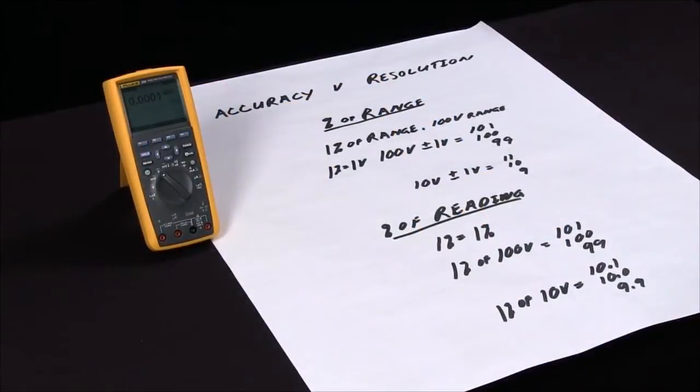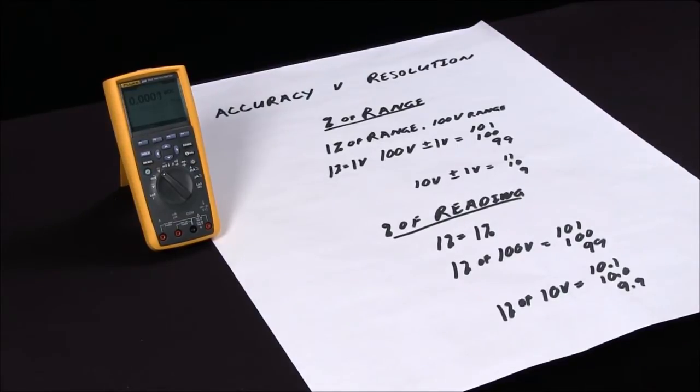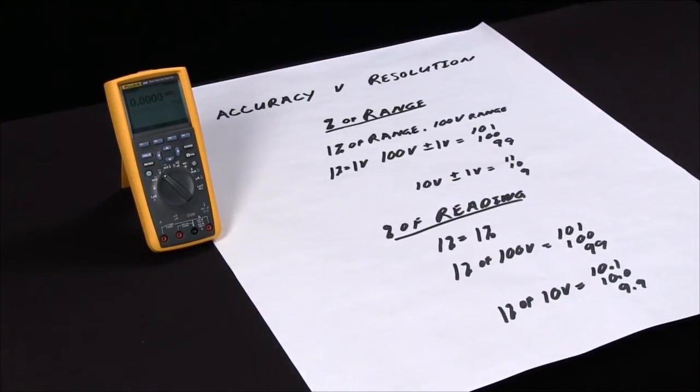Accuracy is an important specification when selecting an instrument because in many cases you want the accuracy of the meter you're using to be at least four times the accuracy of the measurement you're taking. A lot of times, ten times is actually the goal.